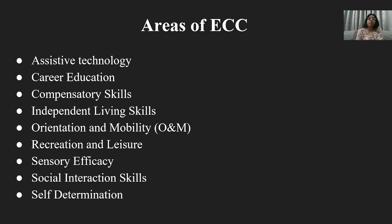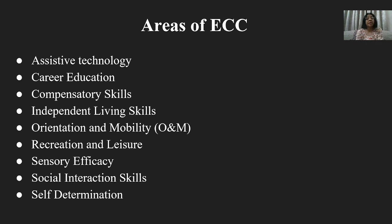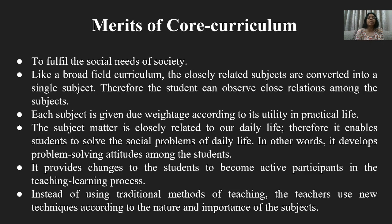The Expanded Core Curriculum (ECC) is for disabled students — especially the visually disabled, whether blind, slightly blind, or partially blind. The core curriculum is expanded for them. The areas covered include: assistive technology such as Braille; career education; compensatory skills — compensating in other areas for visual impairment; independent living skills; orientation and mobility; recreation and leisure activities; sensory efficacy; social interaction skills; and self-determination.